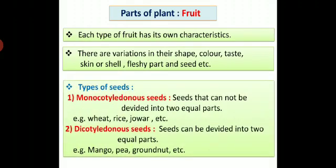Types of seeds. There are two types of seeds: monocotyledonous seeds and dicotyledonous seeds. Monocotyledonous seeds are seeds that cannot be divided into two equal parts. For example, seeds of mango, pea, groundnut, etc.